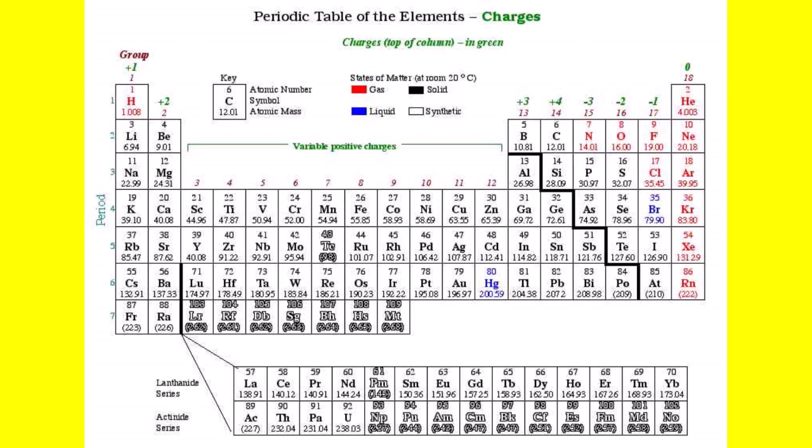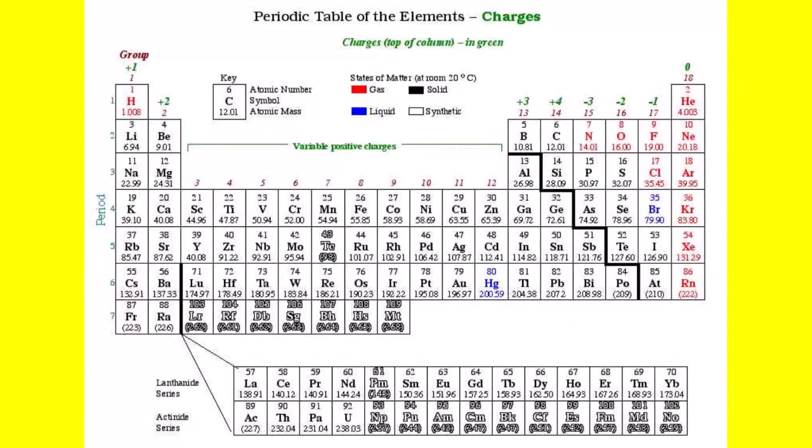Let us talk more about the atomic number. The atomic number tells us the element number — for example, element number one is hydrogen with atomic number 1, element number two is helium with atomic number 2, and element number 11 is sodium with atomic number 11. So the atomic number identifies the position of that particular element on the periodic table.